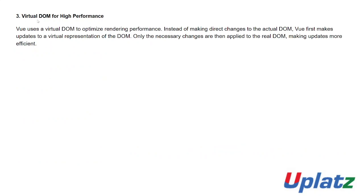Number three: Virtual DOM for high performance. Vue uses a virtual DOM to optimize rendering performance. Rendering performance is the most time-consuming work for a browser. Instead of making direct changes to the actual DOM, Vue first makes updates to the virtual representation of the DOM. Only the necessary changes are then applied to the real DOM when it finds a difference, making updates more efficient.